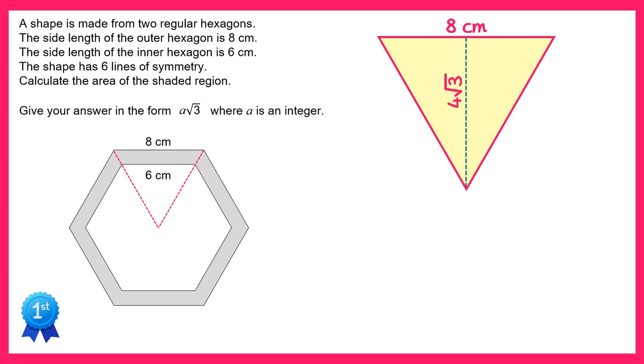We can find the area of this triangle as well in the same way. So area equals one-half times the base which is eight times the perpendicular height four root three, and this will give you 16 root three. So the area of the larger triangle was 16 root three, and the area of the smaller triangle was nine root three.